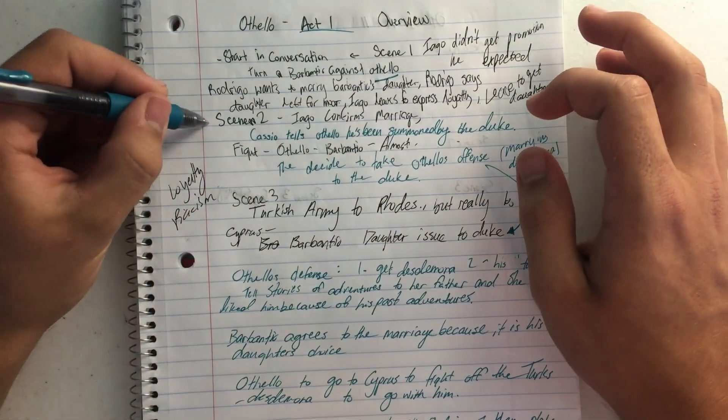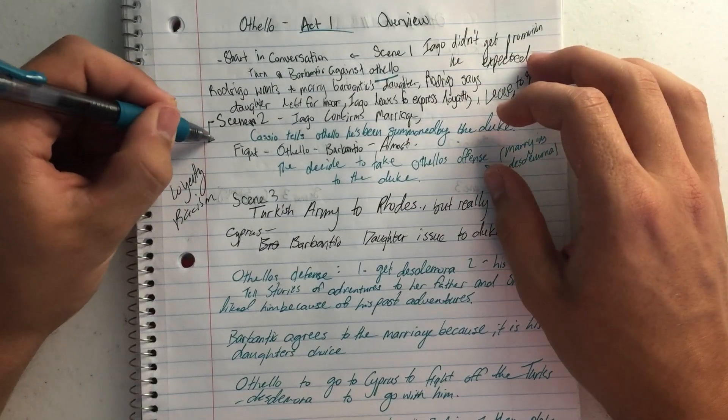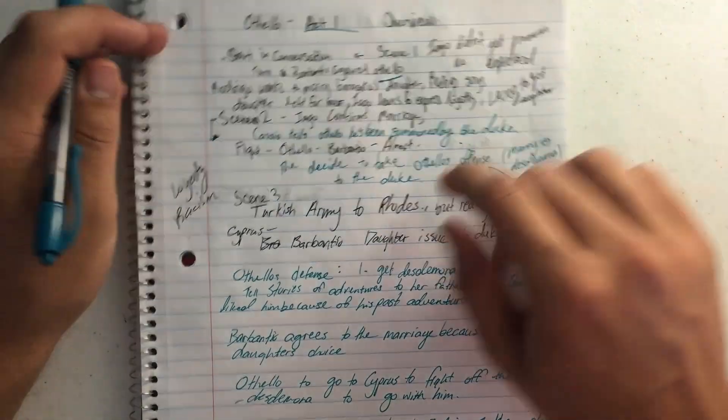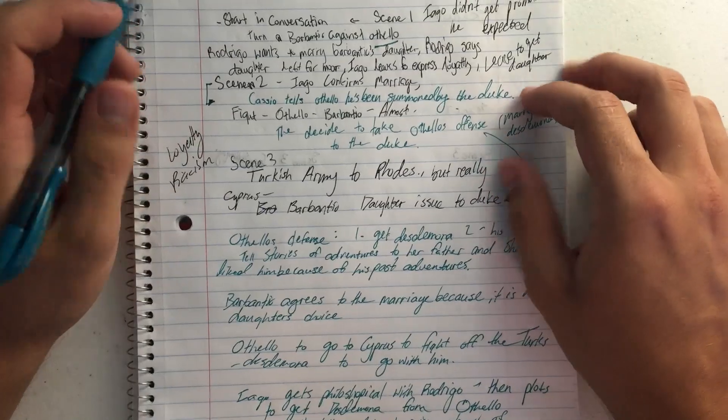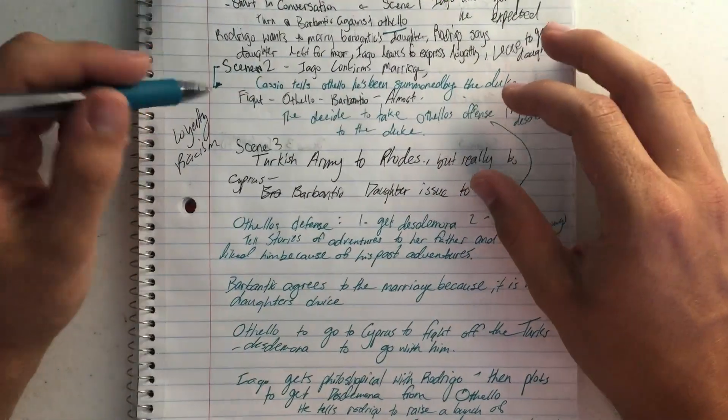In Scene 2, Iago is able to confirm that yes, Othello and Desdemona are getting married. Desdemona being Brabantio's daughter.